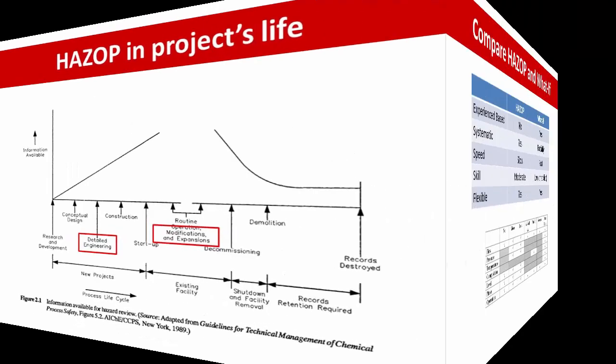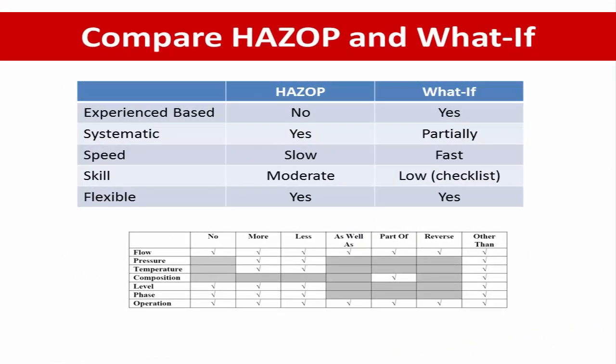Comparing HACCP and What If: HACCP, or hazard operability review technique, requires a moderate level of skill to implement. The HACCP review is a systematic process which must be conducted in a proper fashion with accurate records. A special team leader typically uses standard guide words or deviations to guide the team during the process. The summary comparison between What If analysis and HACCP is shown in the table.